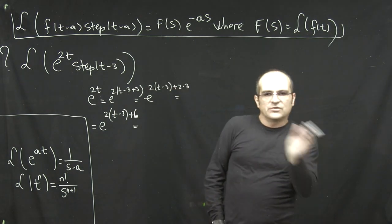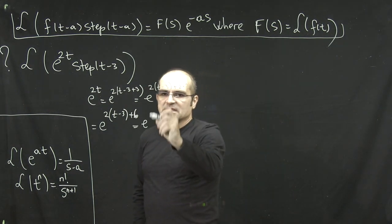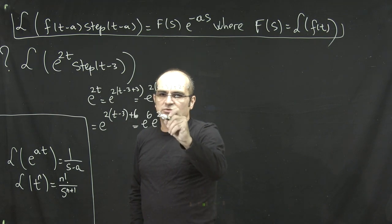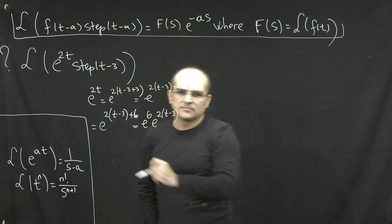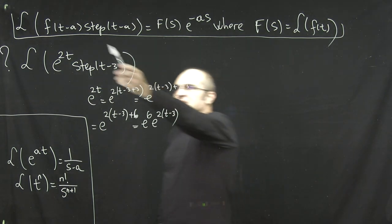So, on the exponent now you have e to the power of 2(t-3) plus 6. And now you can move e to the 6 outside when you take the Laplace eventually. So this will be e to the 6 times e to the power of 2(t-3). So this is how you should write the function so that it fits this framework.